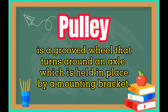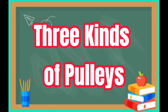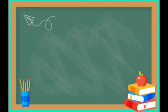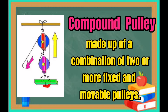Pulley. It is a grooved wheel that turns around an axle which is held in place by a mounting bracket. Three kinds of pulleys: Fixed pulley, which has the axle fixed on a surface and therefore does not move. Moveable pulley, which moves along the rope or wire. Compound pulley, made up of a combination of two or more fixed and movable pulleys.